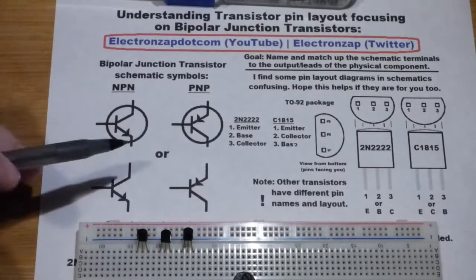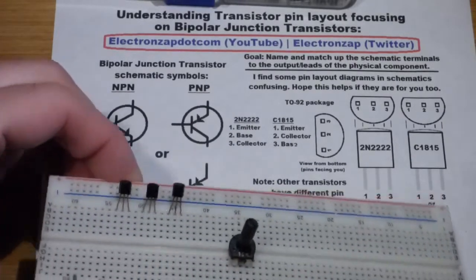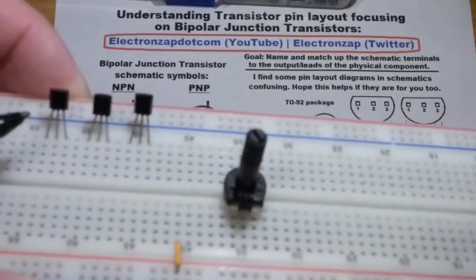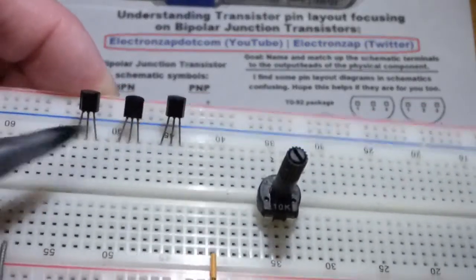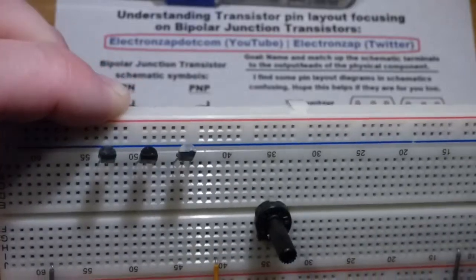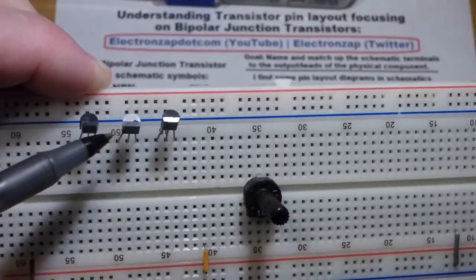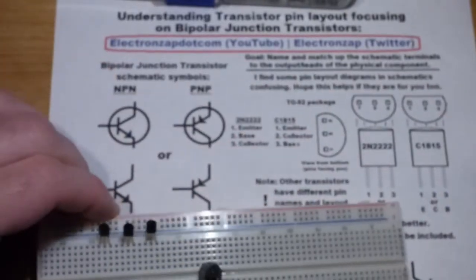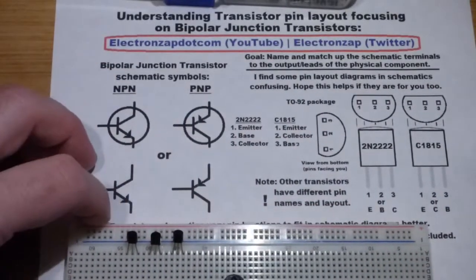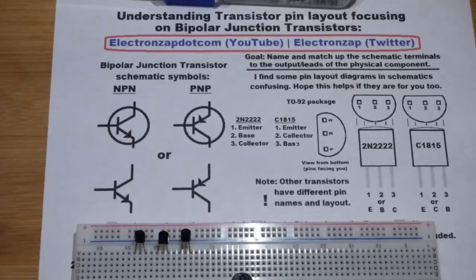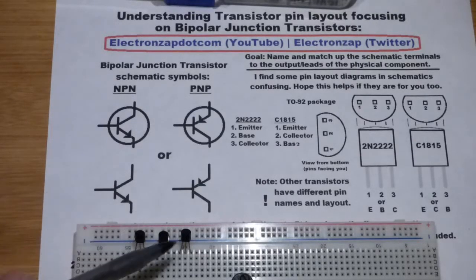In this video we're going to focus on the pin layout for transistors in the TO92 package. We have a flat edge here, and then the rest of it is curved around there. It's a plastic casing over the transistor, and it's known as the TO92 package.